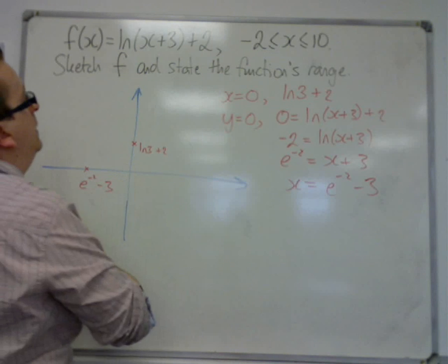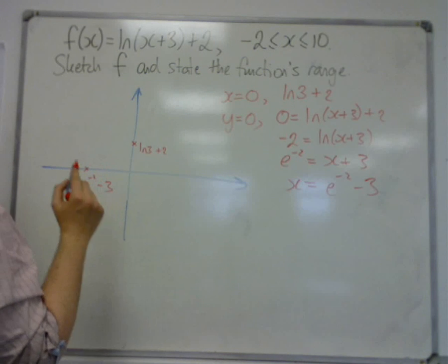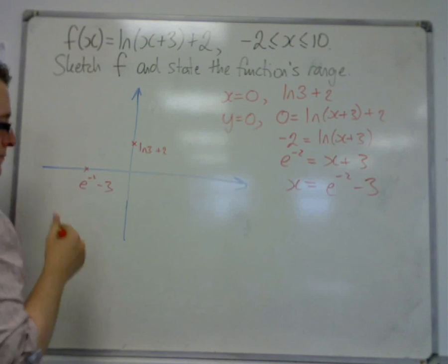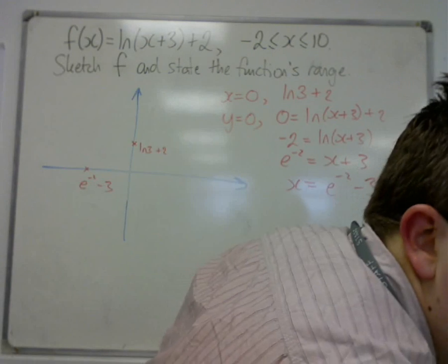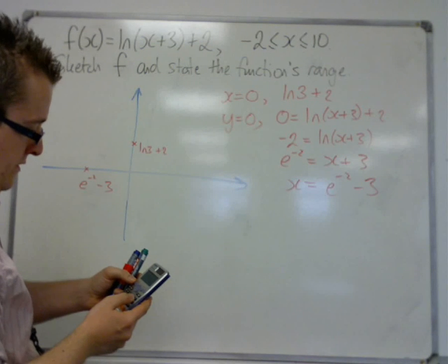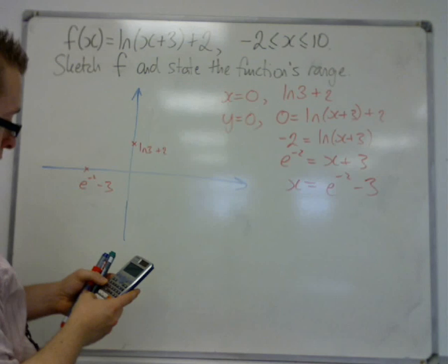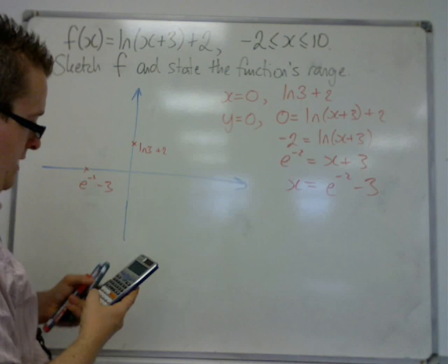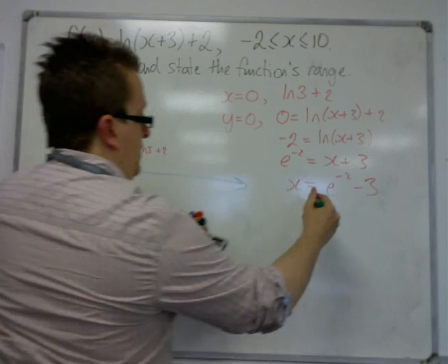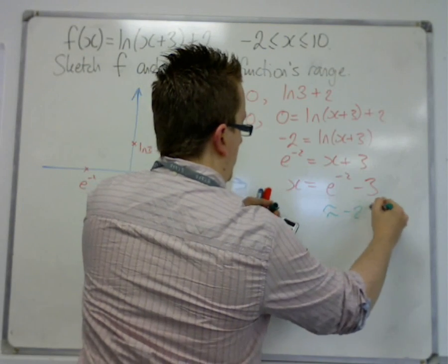So the curve is looking like, well, if you plug it into your calculator, we need to know how close it is to minus 2. So e to the minus 2, take away 3, gets us minus 2.86. So this is approximately minus 2.86.